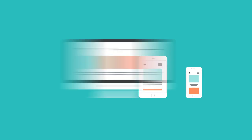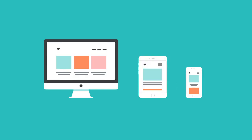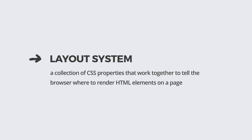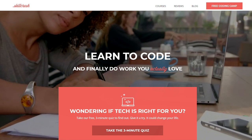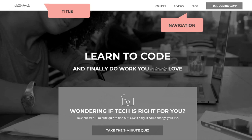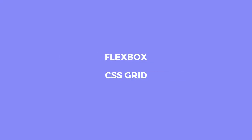In this class, you'll learn how to use CSS layouts to place and align content on web pages so the content looks great on any screen size. A layout system is a collection of CSS properties that work together to tell the browser where to render HTML elements on a page. For instance, the Skill Crush website uses a layout system to place the title, navigation, and content of the site. Throughout this class, you'll learn about two of the most popular layout systems: Flexbox and CSS Grid.